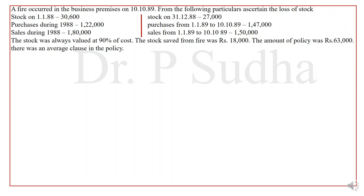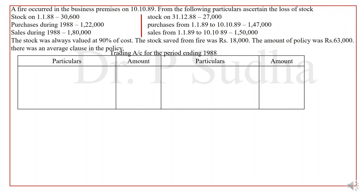In this question, the GP ratio is not given. So, the first thing we have to calculate is the GP ratio. For calculating GP ratio, we have to prepare a trading account for the year before the fire accident. The year of fire is 1989, so we are preparing a trading account for the year 1988 — the year immediately preceding the year of the fire accident.